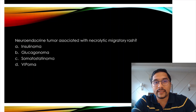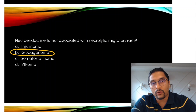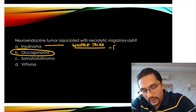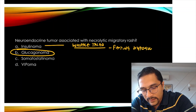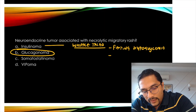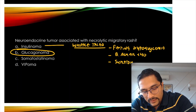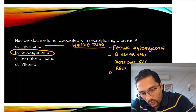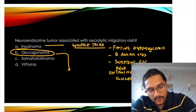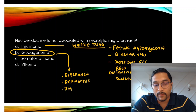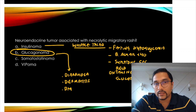Which tumor can present with necrolytic migratory rash? Necrolytic migratory rash is classical of glucagonoma. Insulinoma presents with Whipple's triad: fasting hypoglycemia with blood sugar less than 40, and symptoms relieved on taking glucose. Glucagonoma patients come with diarrhea, dermatitis or necrolytic migratory rash, diabetes mellitus, and dementia.